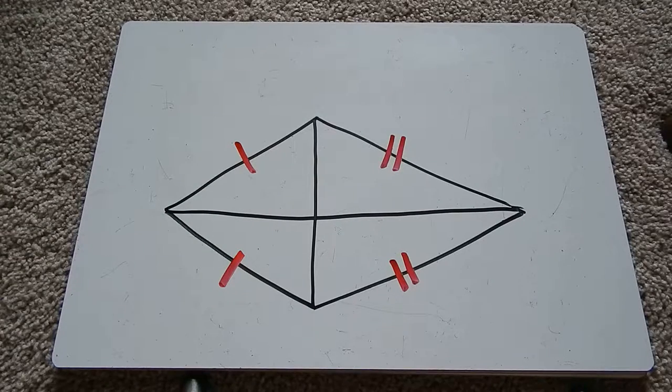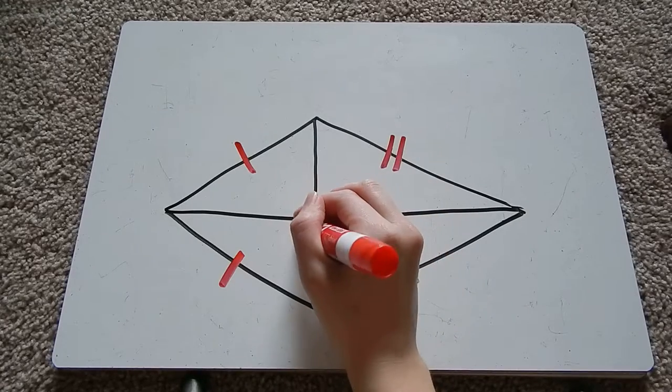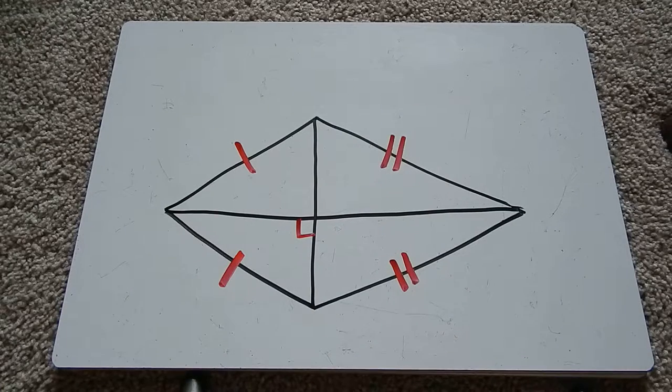Something else we know about kites is that their diagonals are perpendicular. All the angles here are going to be 90 when these diagonals cross.